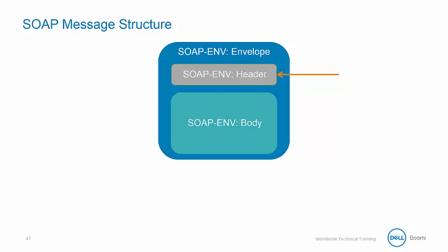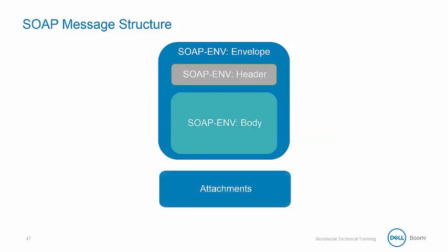If the header element is present, it must be the first child element of the envelope element. The required SOAP body element contains the actual SOAP message that's intended for the ultimate endpoint. The payload for a SOAP message often includes a word processing or PDF document, an image, or another binary file attachment using multi-purpose internet mail extensions.